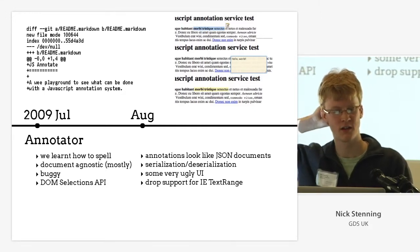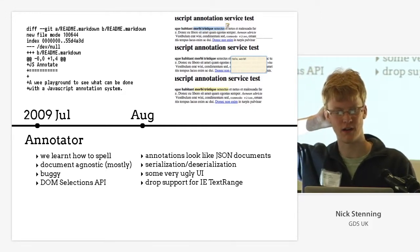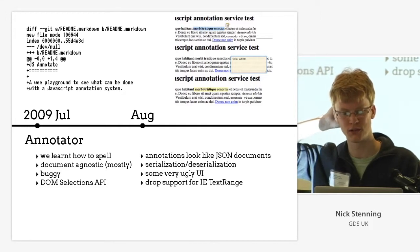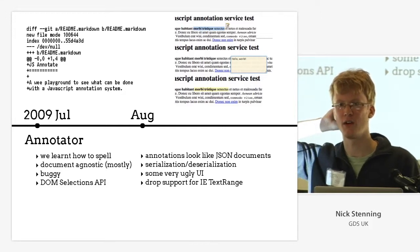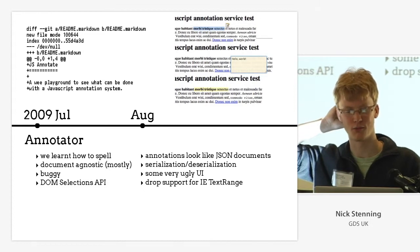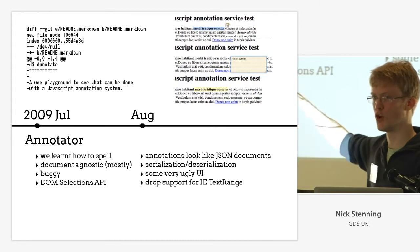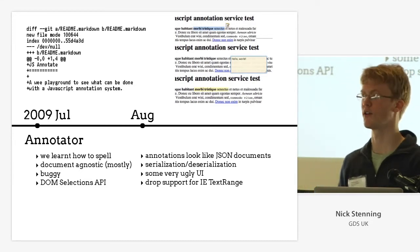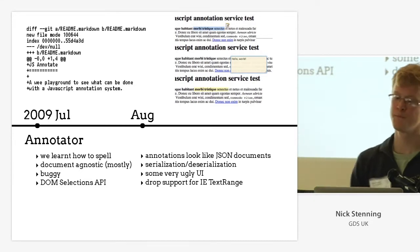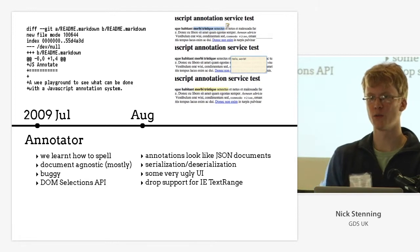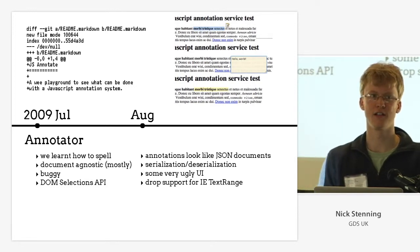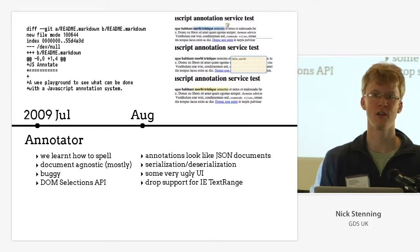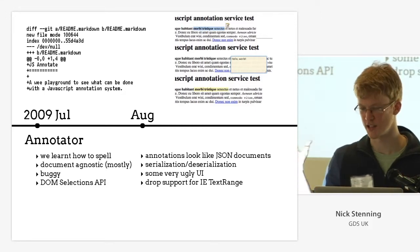It did have some support for IE's text range model — don't ever do anything with IE's text range model, it's horrible. So after a whole month, we dropped support for IE text range. I built some very ugly user interface, which you can see up here. And we very quickly got into serialization and deserialization of annotations on arbitrary webpages to things that were basically JSON documents.